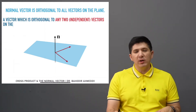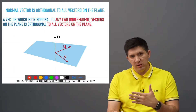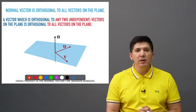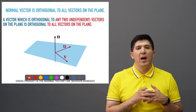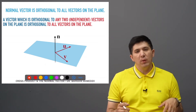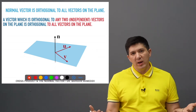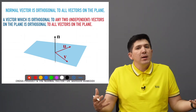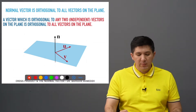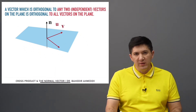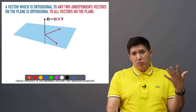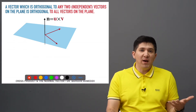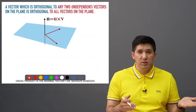If the normal vector is orthogonal to any two independent vectors from your plane, it is going to be orthogonal to all vectors from your plane. So it is only necessary to orthogonalize the normal vector to two vectors from the plane. Given two vectors u and v, the cross product was invented and developed precisely to get a vector which is orthogonal to both u and v.